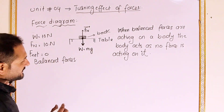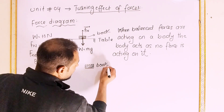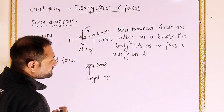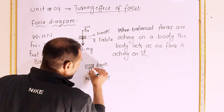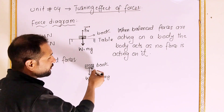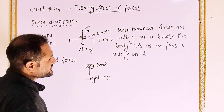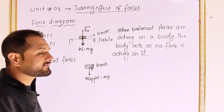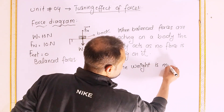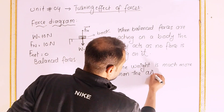Let's consider a book in the air. The weight W acts downward, equal to mg. There is also air resistance acting on the book. The air resistance is very low compared to the weight.